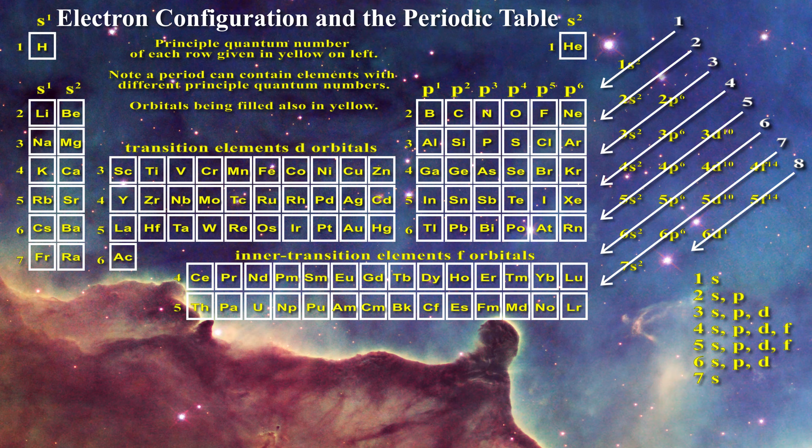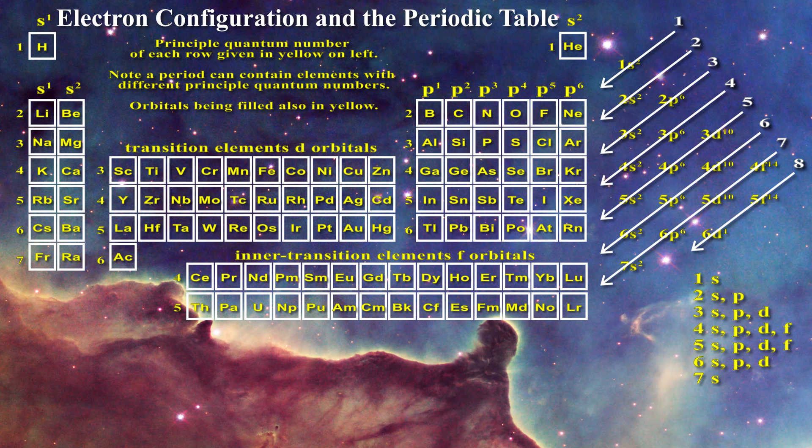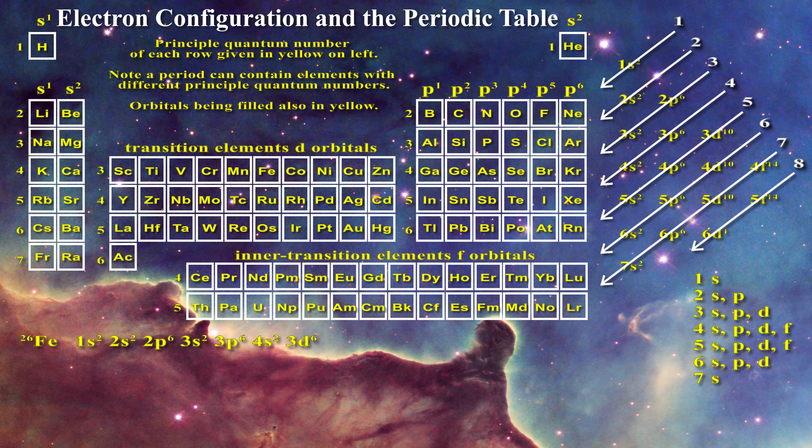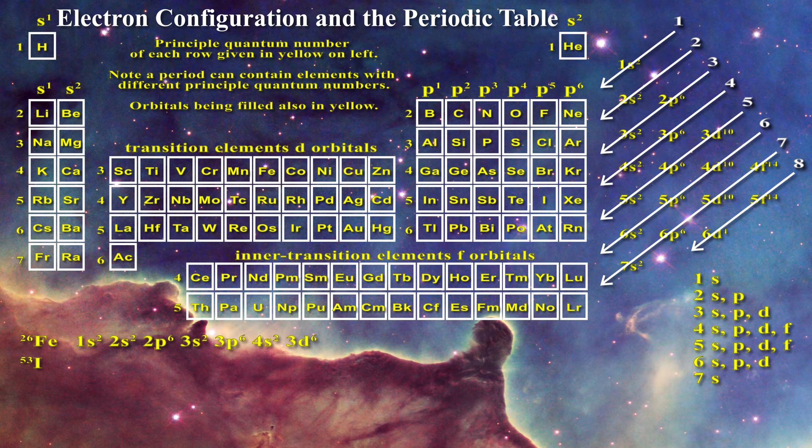In order to write the electronic configuration of an atom one simply looks at the atomic number and arranges the electrons following the rules outlined by the arrows. For instance, the atomic number of iron is 26 and these 26 electrons are arranged as follows: 1s2, 2s2, 2p6, 3s2, 3p6, 4s2, 3d6.